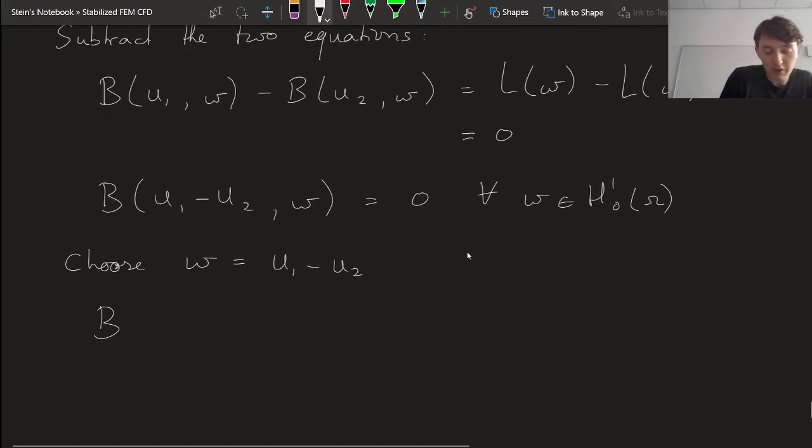So with that choice, that above statement says that B(u₁ - u₂, u₁ - u₂) is equal to 0.